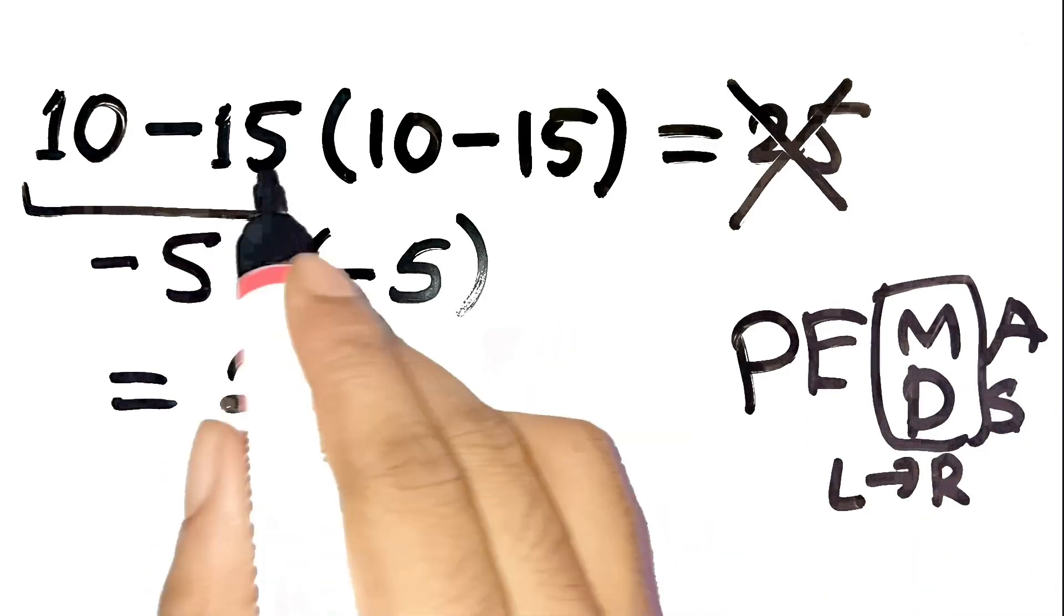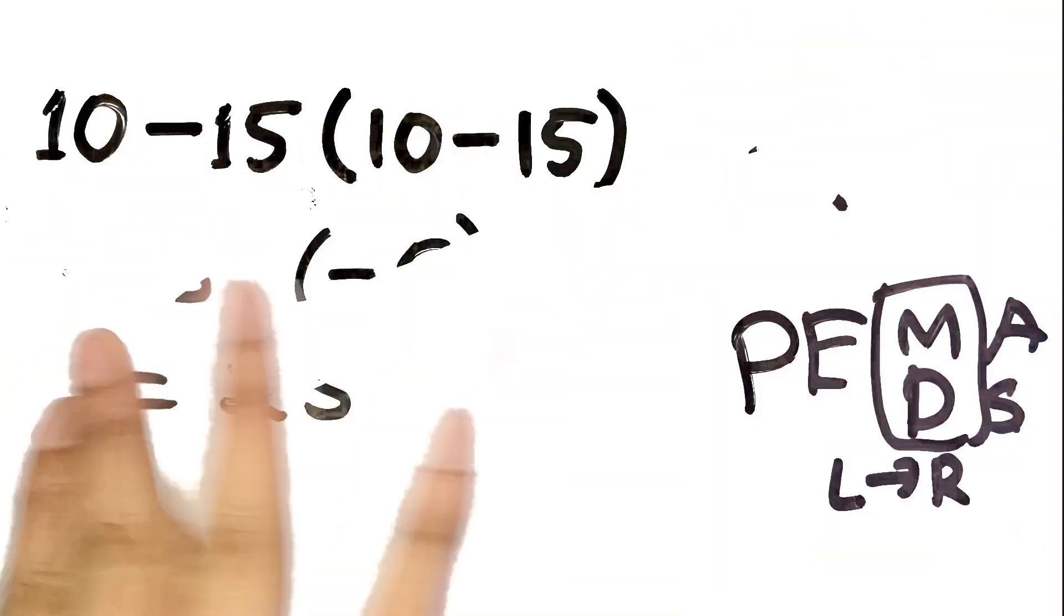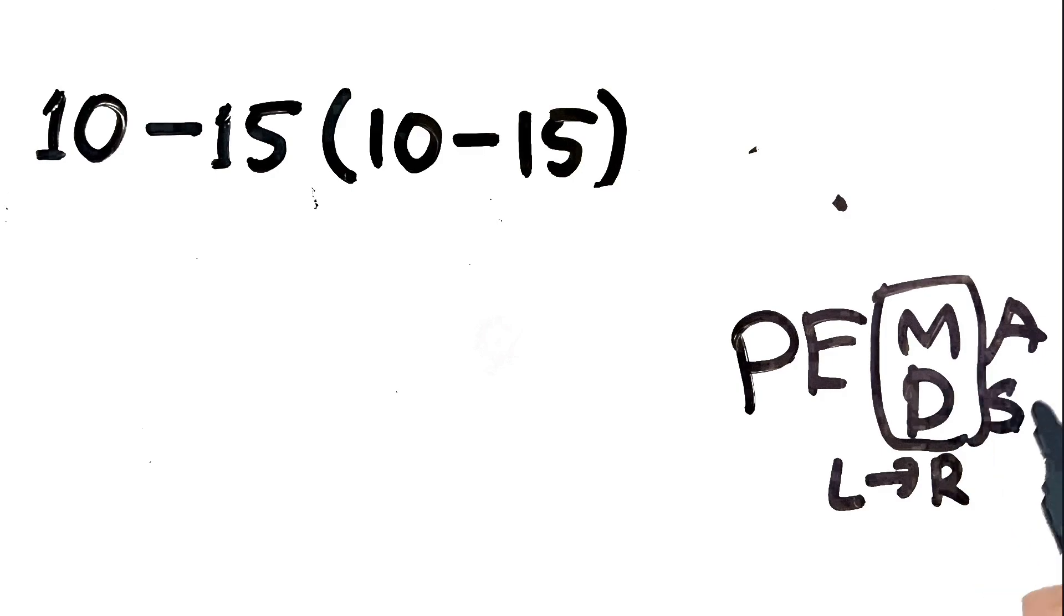So the subtraction on the outside is not done first. Multiplication always has priority over addition or subtraction.